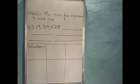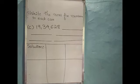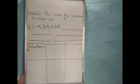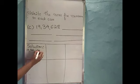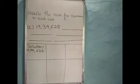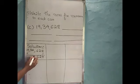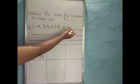C1: 19,34,628. Here also we have to find out the next 5 numbers. The given number is 19,34,628. We should add 1 to the given number to get the next number. So I will write the given number in the solution box: 19,34,628. If we add 1, then 8 plus 1 is 9. Write 2 as it is, then 6 as it is, and write remaining numbers as it is. So the next number is 19,34,629.